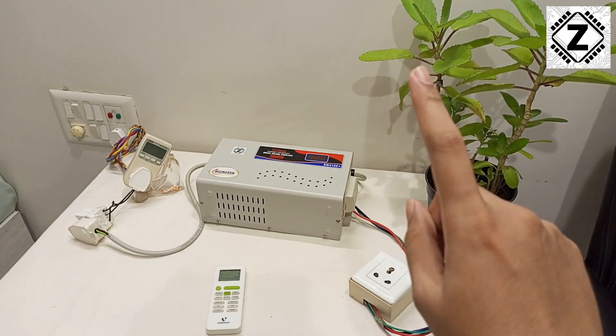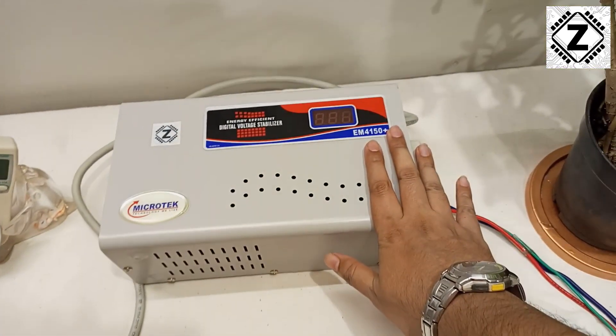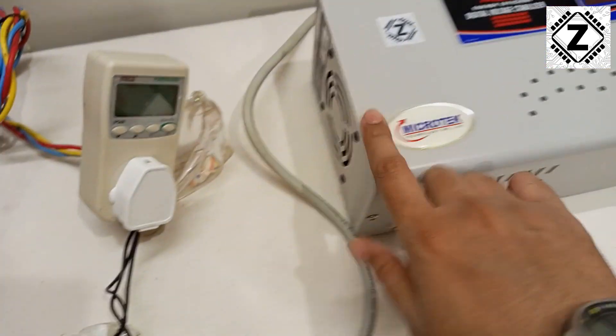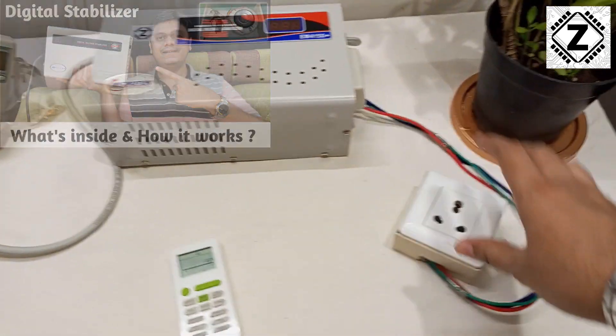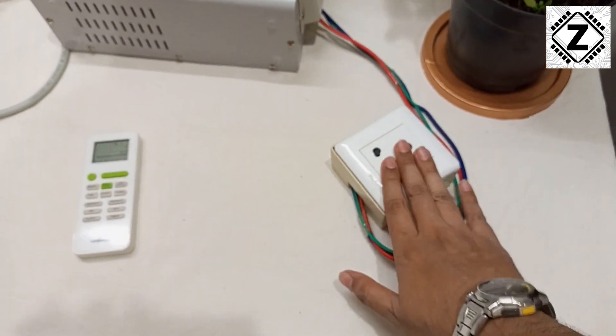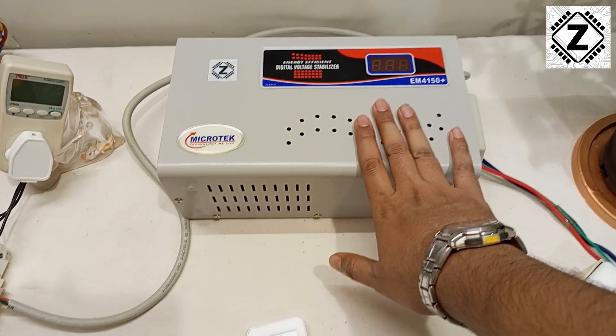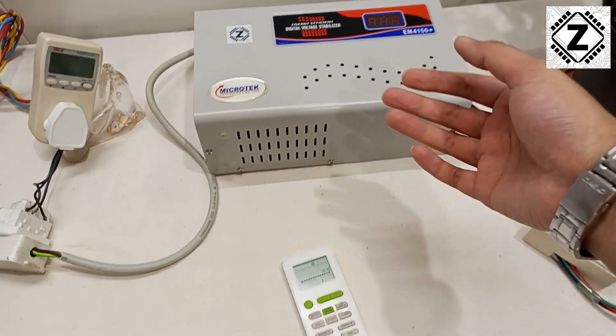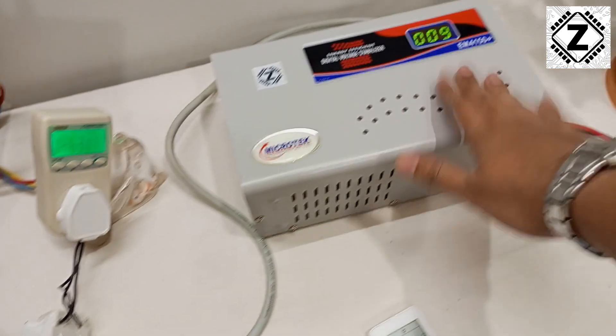Welcome to the first part of testing, which is idle draw or self power consumption. Here I have the stabilizer with me, and as you see it has a lot of components. For example, it has this display, this fan, a huge transformer inside. Even when absolutely no load is connected - you can see this is the output section of the stabilizer and nothing is connected - it is still going to consume some amount of power to keep all of this running. This is known as idle power consumption.